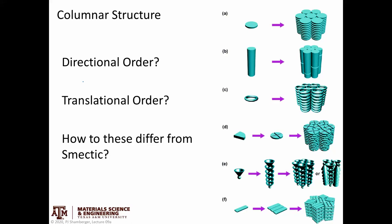Columnar structures can be somewhat more complicated depending on the actual shape of the building block. We can have disks, rods, rings, or wedges — these tend to stack on top of each other. In some cases you might have translational order perpendicular to the direction of stacking, and you definitely have translational order along the stacking direction. You would ask the same kinds of questions: where do we see directional order and translational order, and how are these different from smectic structures?